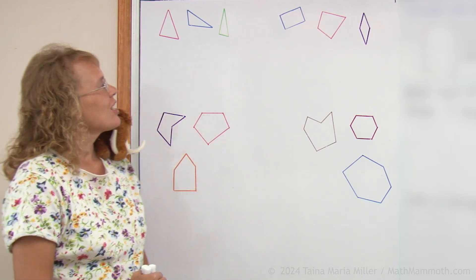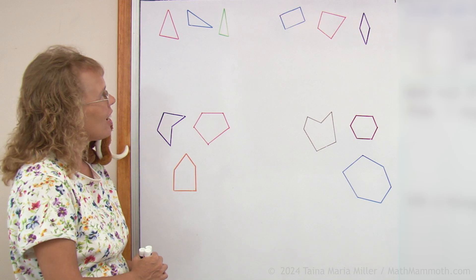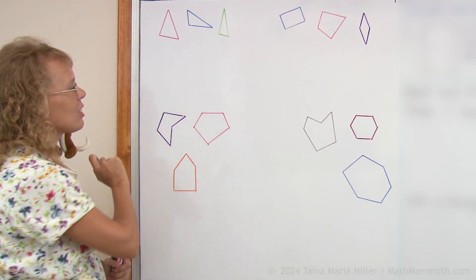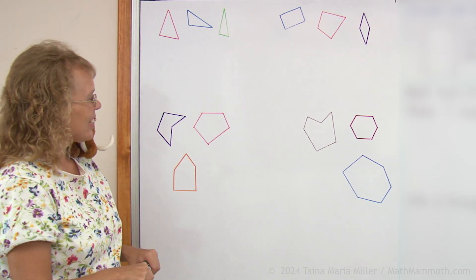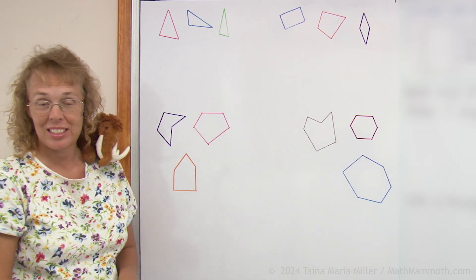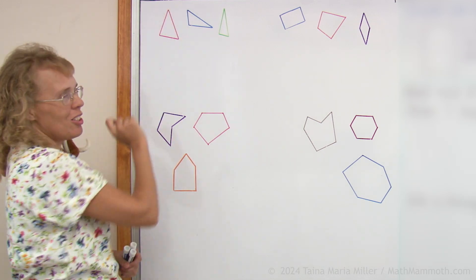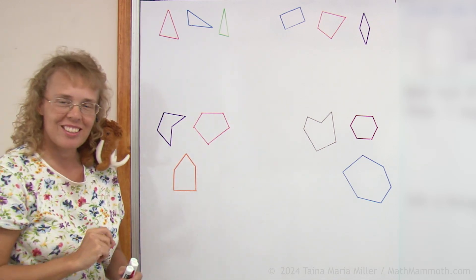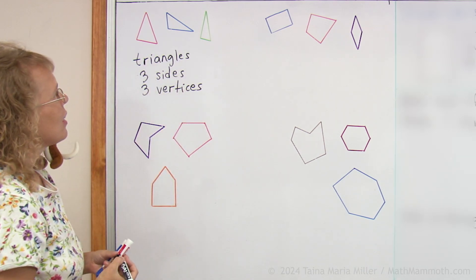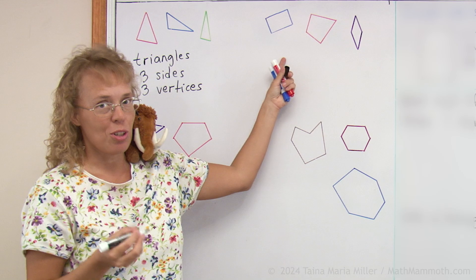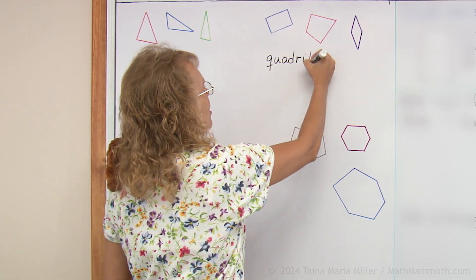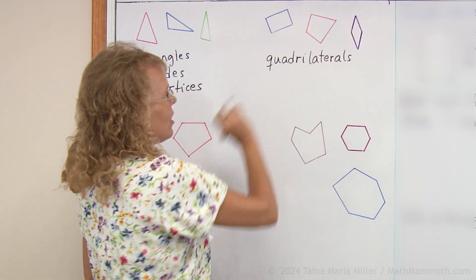Everybody loves shapes! So I drew here a bunch of them in different colors. Your task is to figure out how I classified them — why did I put these in this group and these in this group? It's not by color and it's not by size. It is by the number of corners or vertices. These here have three corners or vertices and three sides, and they are called triangles. These ones have four sides and four corners or vertices, and they are called quadrilaterals — quadri meaning four, and lateral having to do with sides. So it's like four-sided shapes.